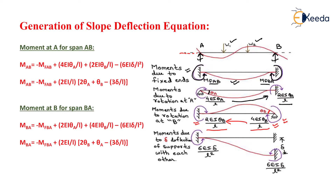We also consider the case where there is a sinking of support by an amount delta. Due to this sinking of support, a moment of 6EI·δ/L² acts in the anti-clockwise direction.